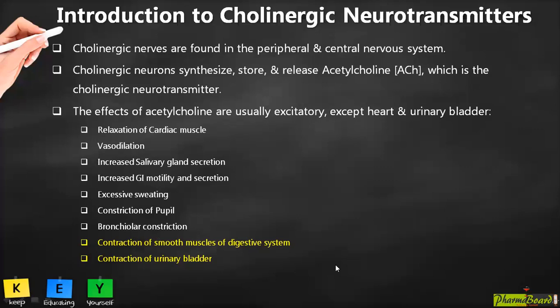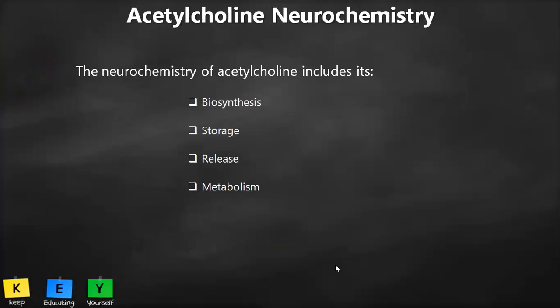Acetylcholine also causes contraction of smooth muscles of the digestive system, thereby increasing peristaltic movement, and contraction of the urinary bladder. The neurochemistry of acetylcholine involves four steps: biosynthesis, storage, release, and metabolism — describing how acetylcholine is synthesized, stored, released, and broken down by the body.